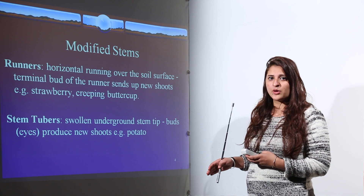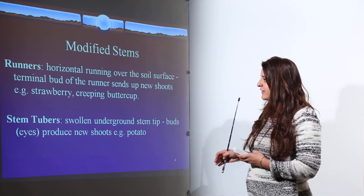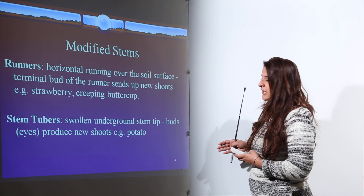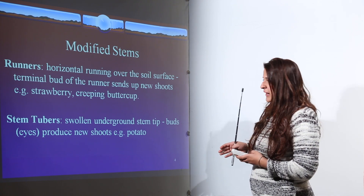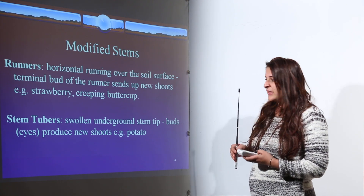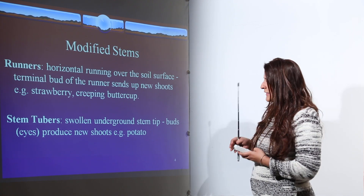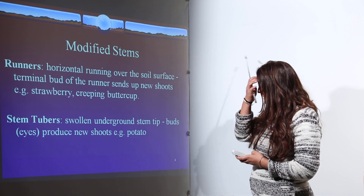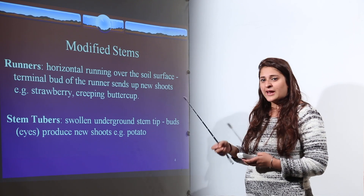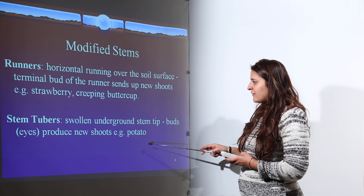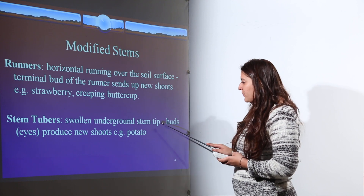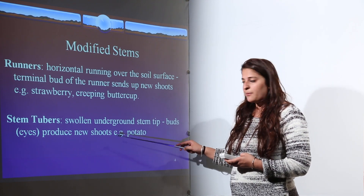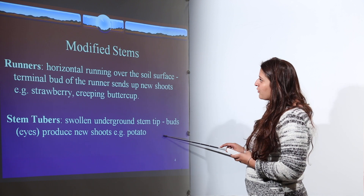Another example of stem modification is stem tubers. In stem tubers, the swollen underground stem tip produces various buds, and these buds then produce new shoots which can develop into a complete plant. This occurs in potato.